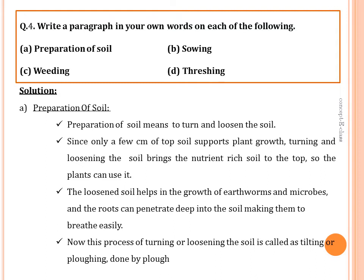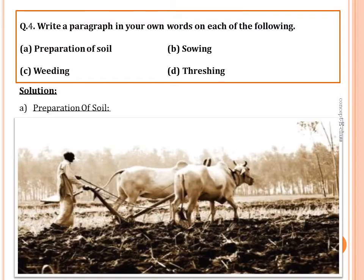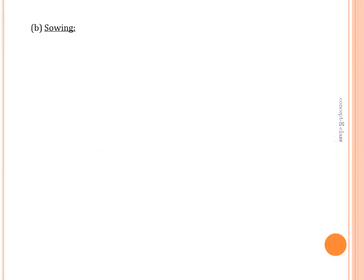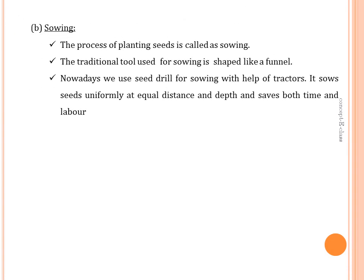By loosening the soil, plants can easily use nutrients inside the soil. It also helps the growth of earthworms and microbes, called friends of farmers, and roots can penetrate deeply and exchange gases. This process of turning and loosening the soil is called tilling or ploughing, done with a plough.